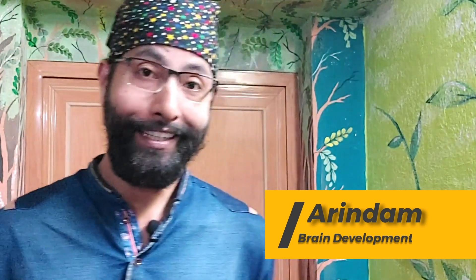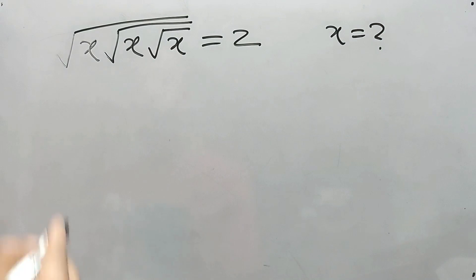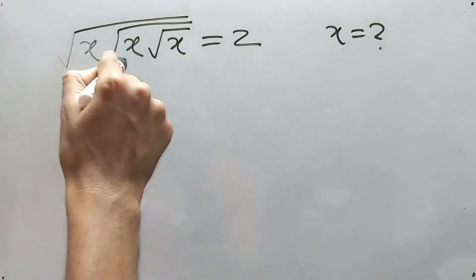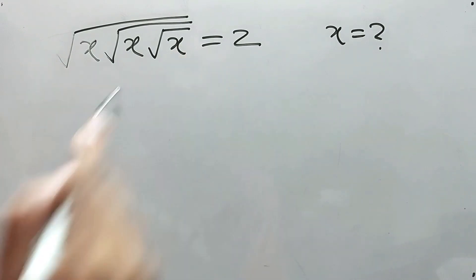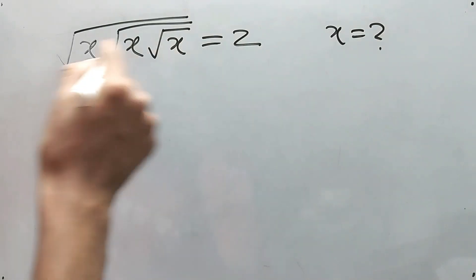Hi guys, this is Arindam. You're watching Brain Development. Well, instead of memorizing, let's focus on mastering the approach. Square root of x, square root of x, square root of x, only three, is equal to two. Now what will be the value of x? Right, simple thing. Definitely this time also...